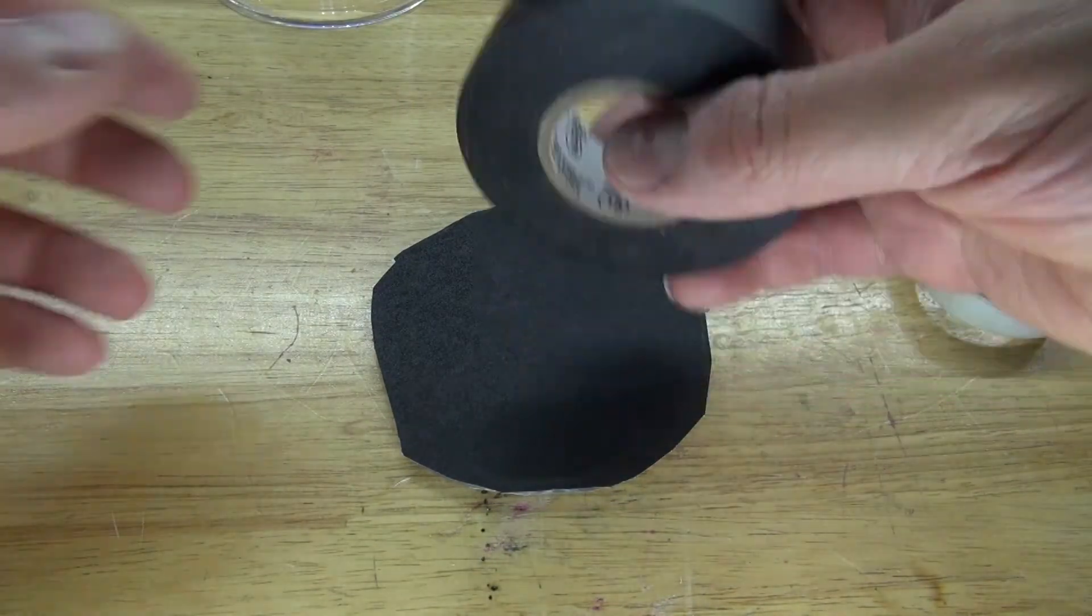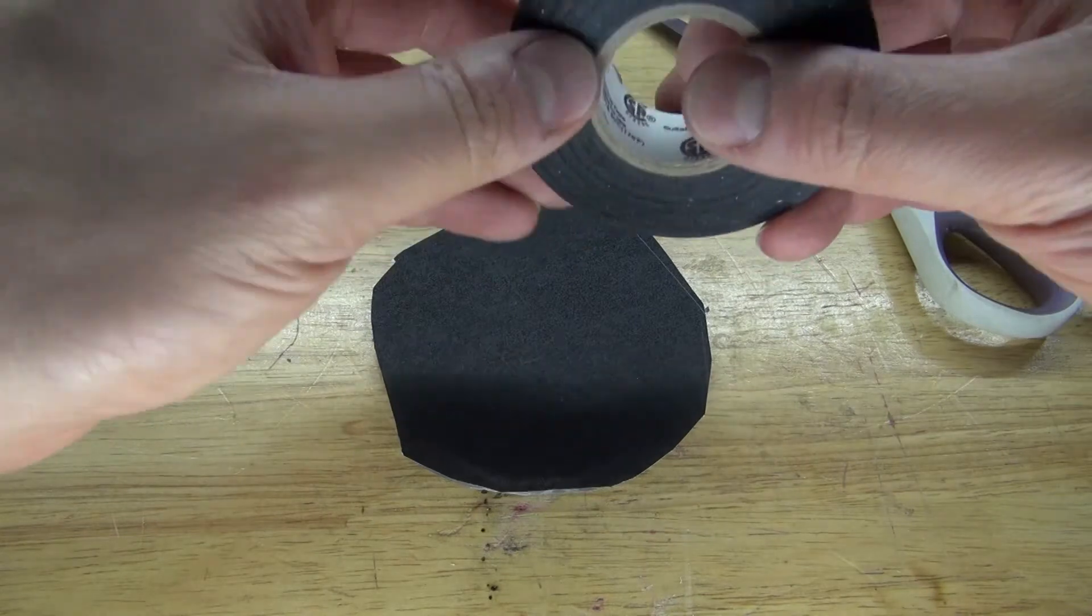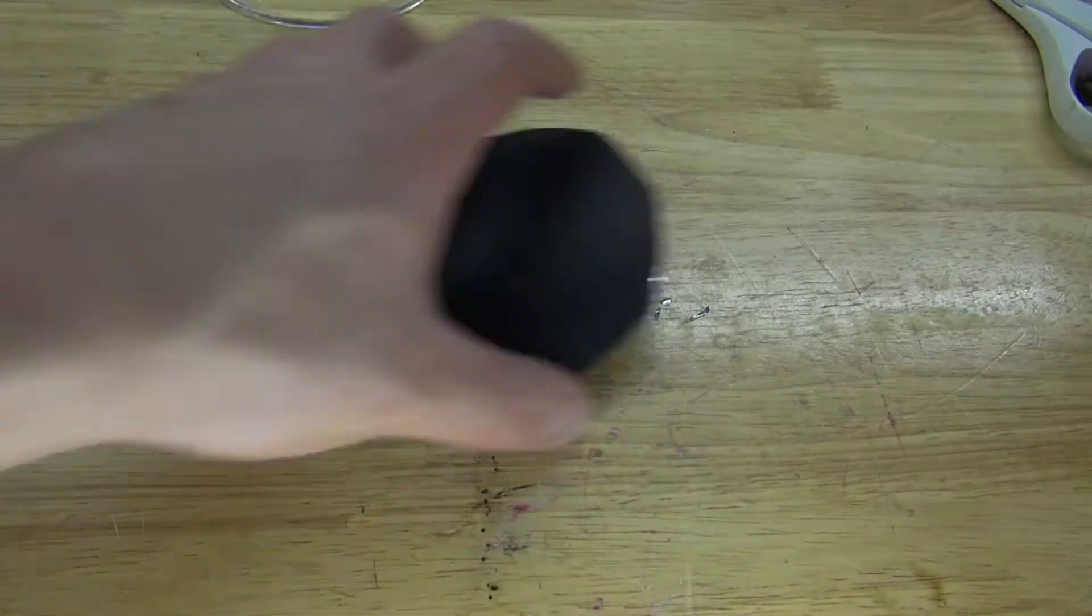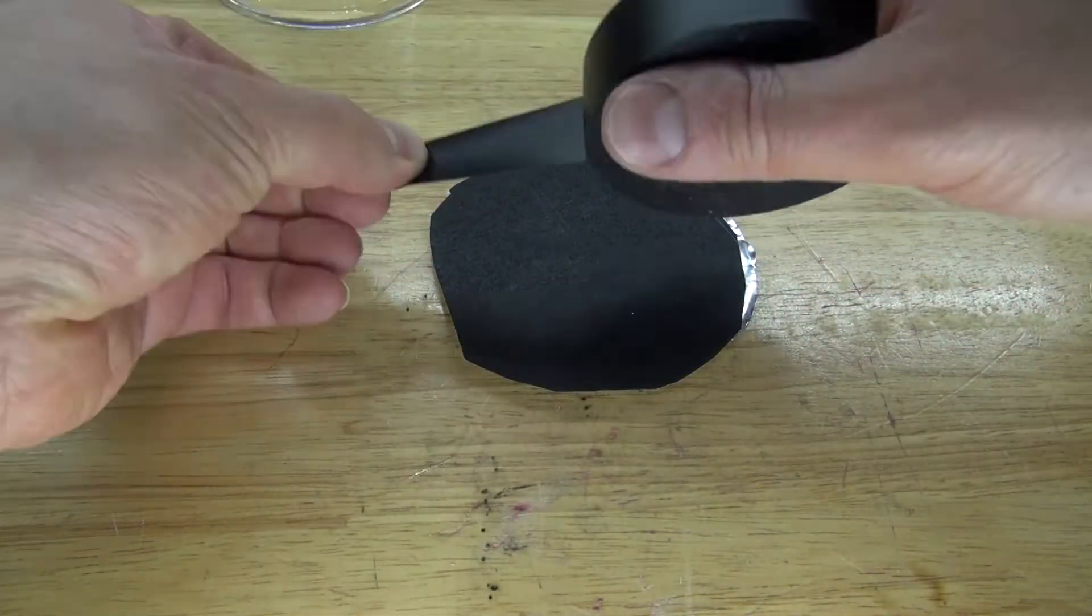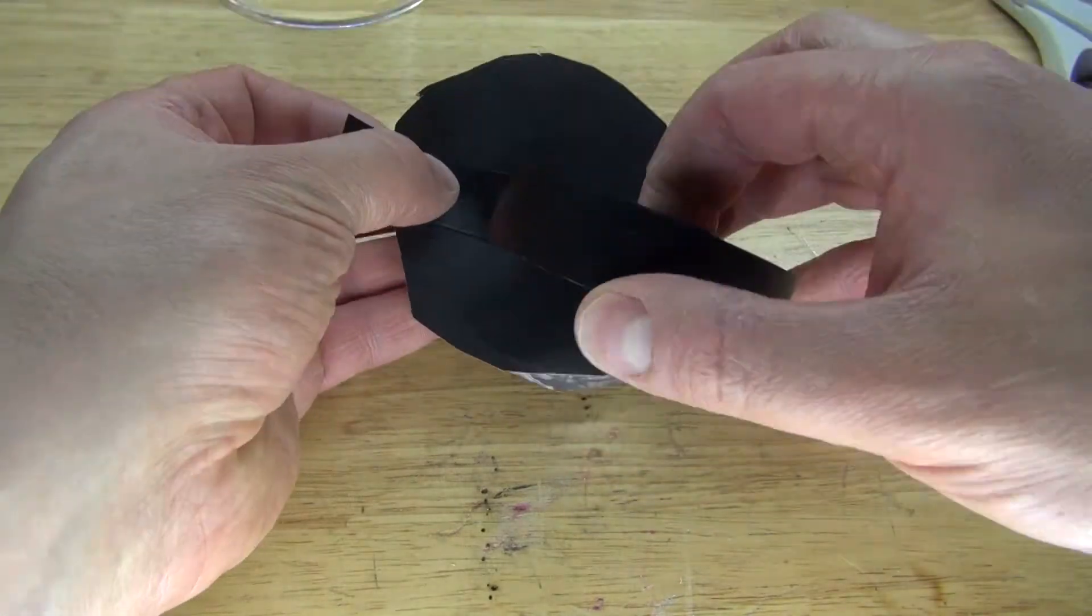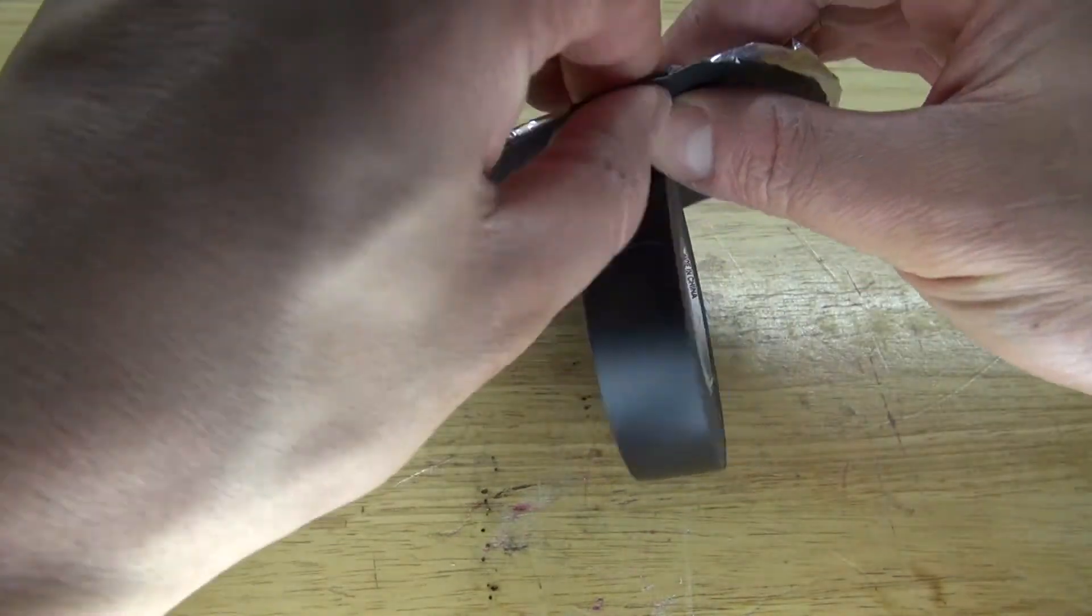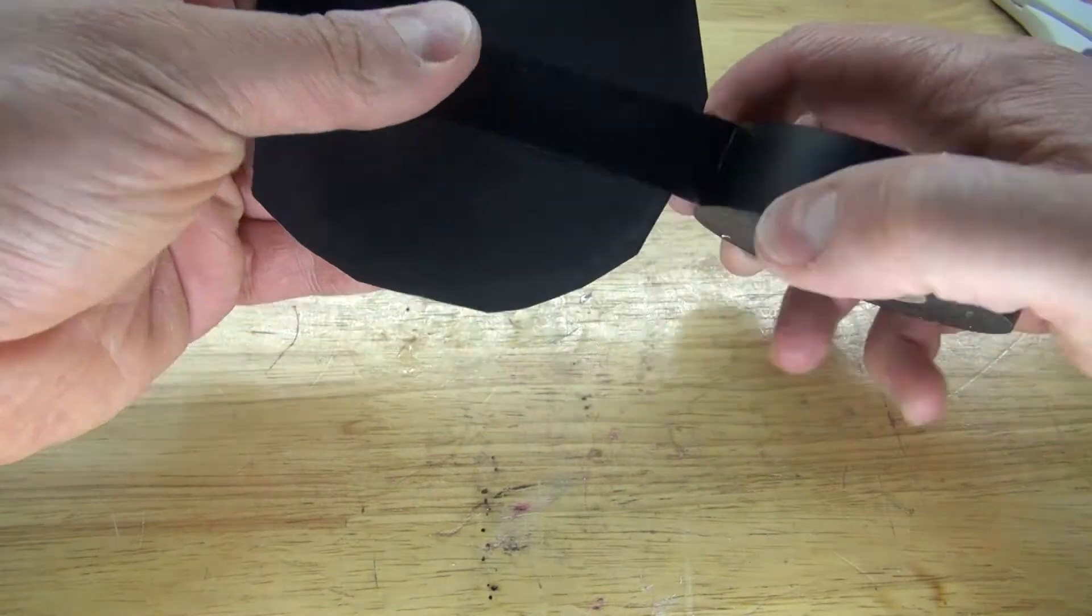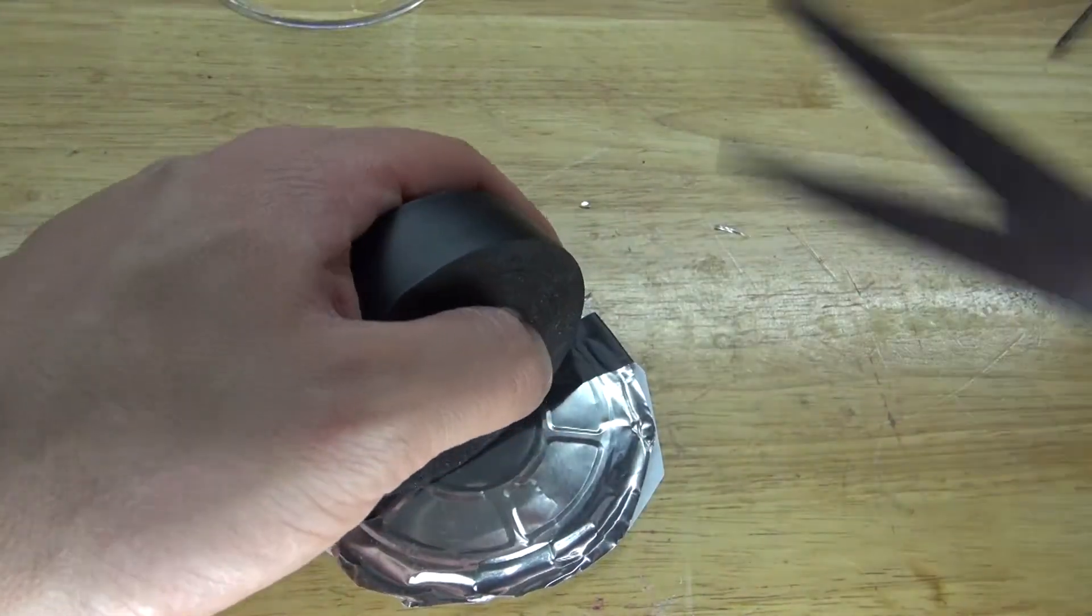And now I'm going to take this black electrical tape and just simply tape it on. Yes, as you can see, this is very crude and very sloppy. But this is what you get if you're going to recycle trash and use only parts that you have laying around.